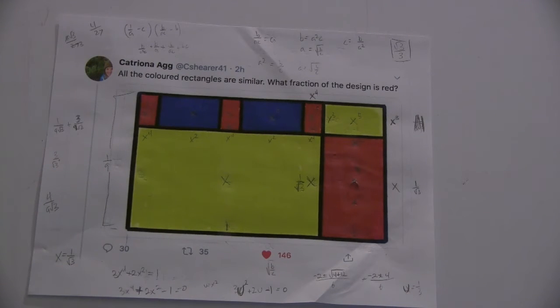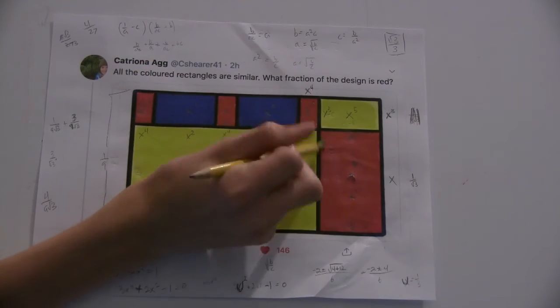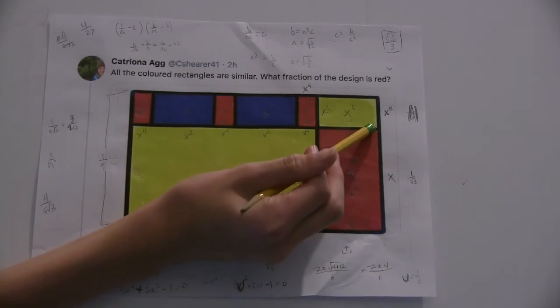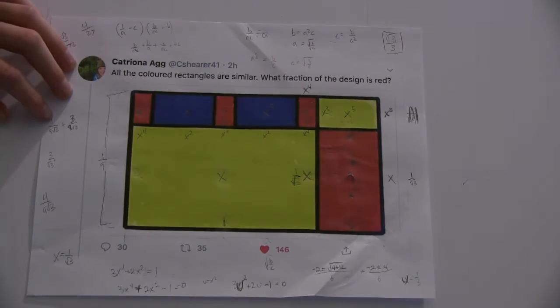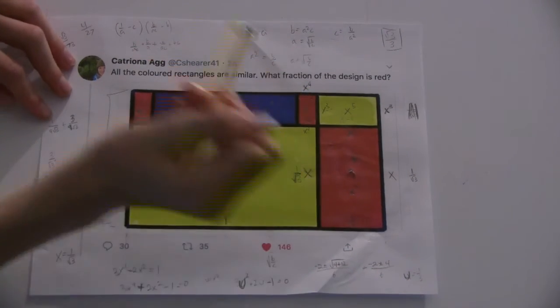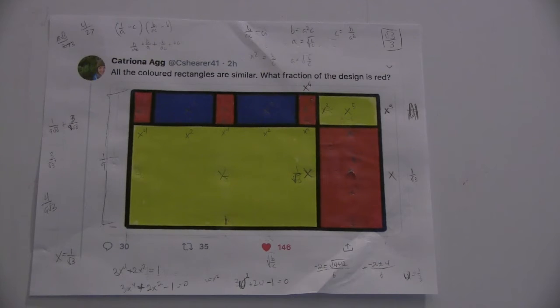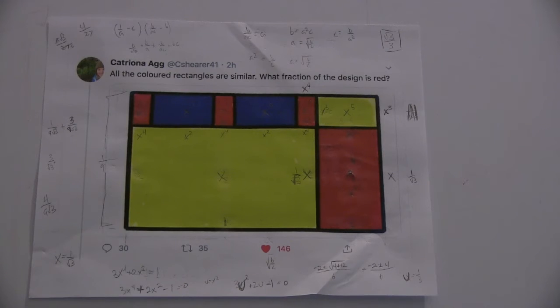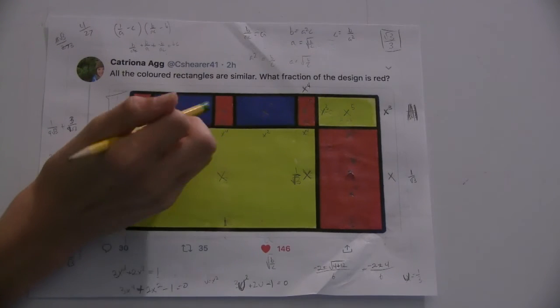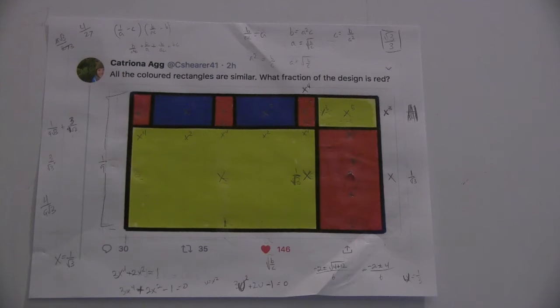So then, since all the rectangles are similar, this side is x, so this side would be x squared, this side would be x cubed, and this side x to the fourth. And so it actually turns out that these blue rectangles are congruent to the yellow rectangle. And so we can get areas for all of the rectangles in terms of x, like it's all x to some power.